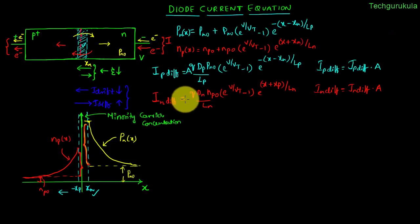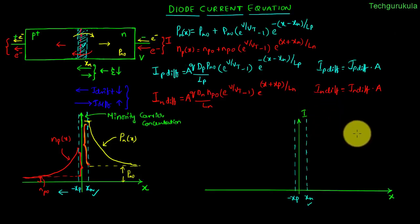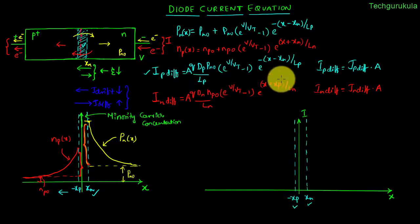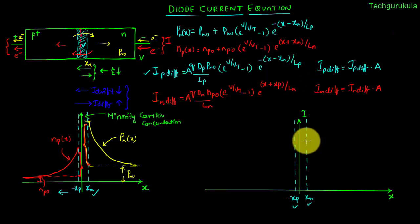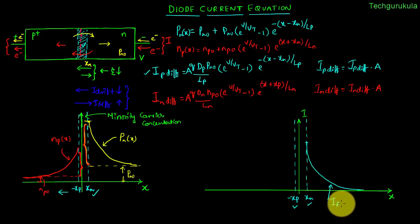Converting J_p,diff to I_p,diff by multiplying with A, and J_n,diff to I_n,diff by multiplying with A. We can see that the diffusion currents are actually changing with respect to x. Let us plot these functions with respect to distance, taking current on the y-axis and distance on the x-axis. Representing the edge of the depletion region on the n-side as x_n, and edge of the depletion width on the p-side as −x_p. For I_p,diff, at x = x_n the value is the full magnitude as the exponential equals 1, and as x increases this quantity decreases exponentially.